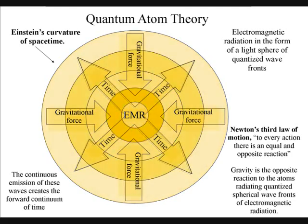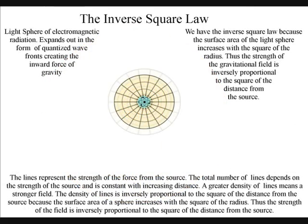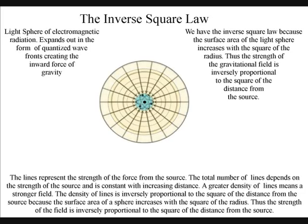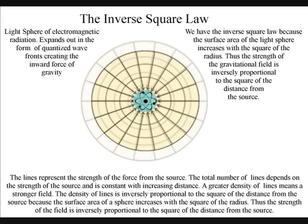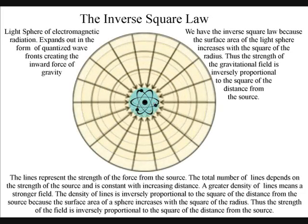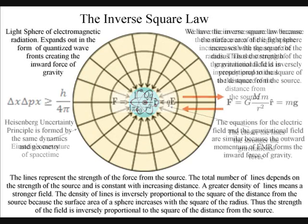We have the inverse square law because the surface area of the light sphere increases with the square of the radius, thus the strength of the gravitational field is inversely proportional to the square of the distance from the source.